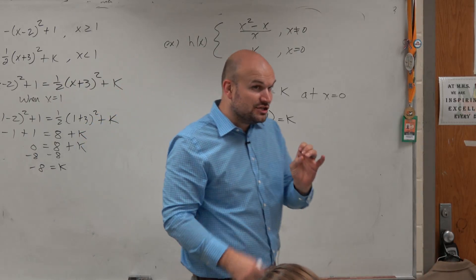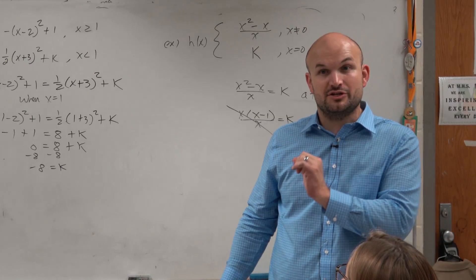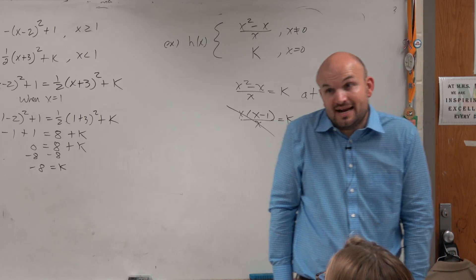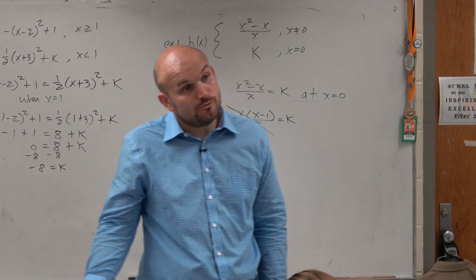Now, I'm not asking you what the discontinuity is. But do we know what type of discontinuity now occurs at x equals 0? It's a removable hole, right? It's not an asymptote. It's not a jump. It's a removable hole.